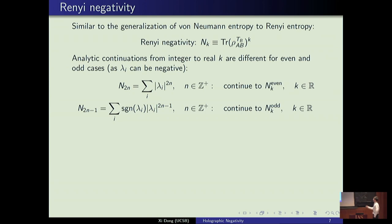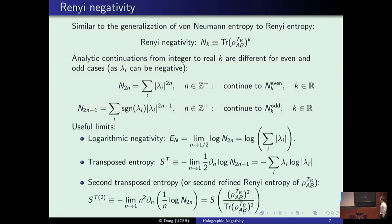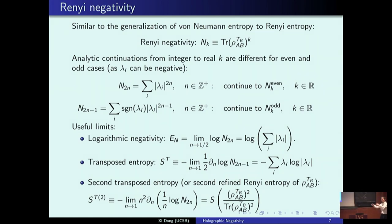There is a function defined using all the even Rényi negativities that continues to an analytic function called the even analytic continuation, and another analytic continuation that comes from the odd Rényi negativities — and these two don't have to agree; they can be different analytic functions. Log negativity can be thought of as the n → 1/2 limit of the even Rényi negativity, where the order is 2n, so we start with even order and continue to order 1.